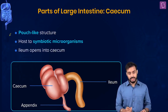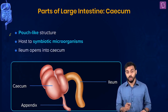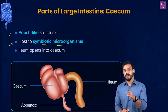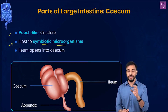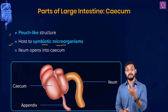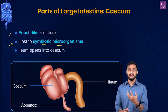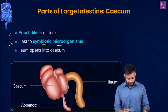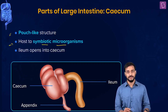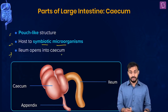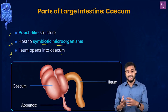The cecum is a pouch-like structure and is a host to many symbiotic microscopic organisms. You know about symbiosis - the symbiotic relationship we studied in the biological classification chapter. Also importantly, the ileum - the last part of the small intestine - opens into the cecum.